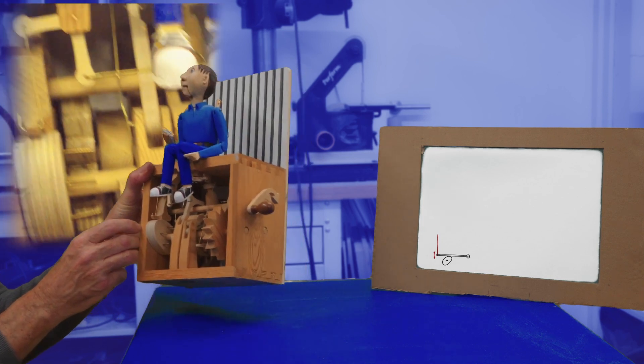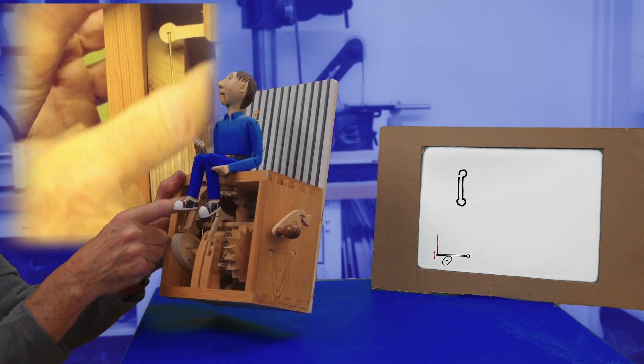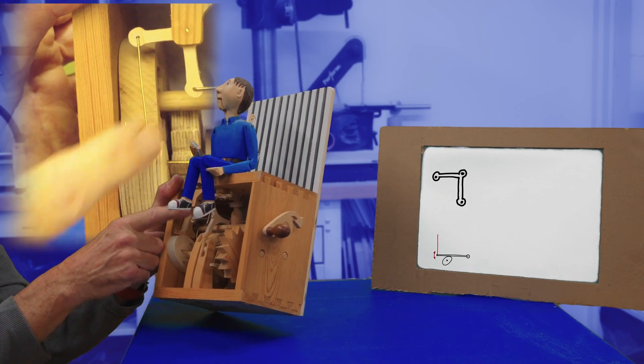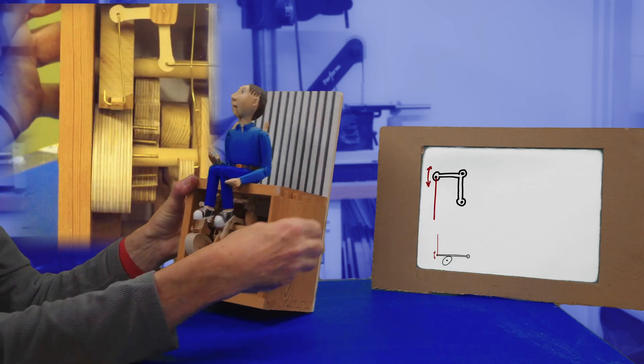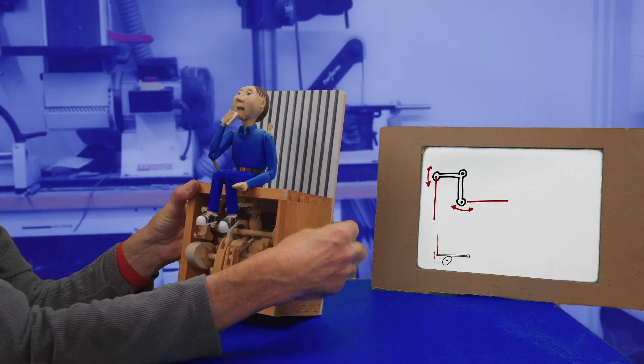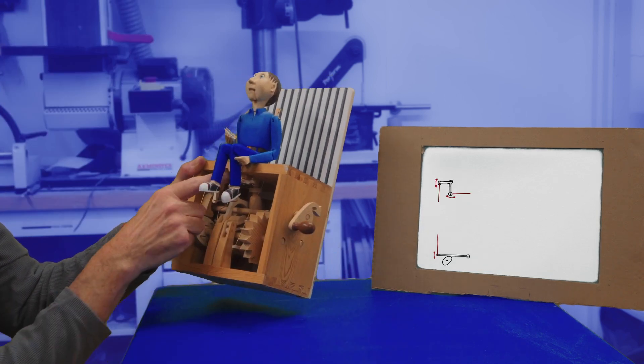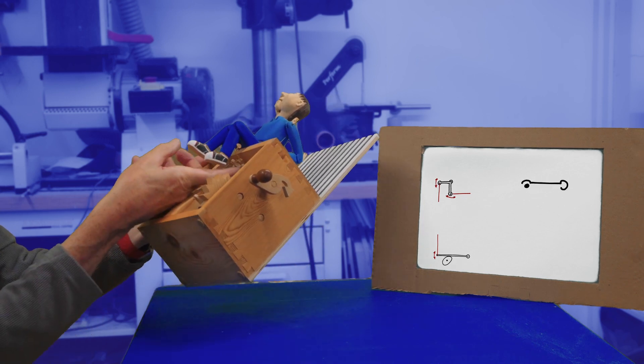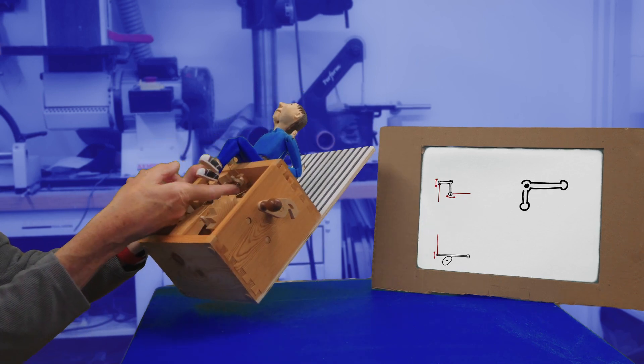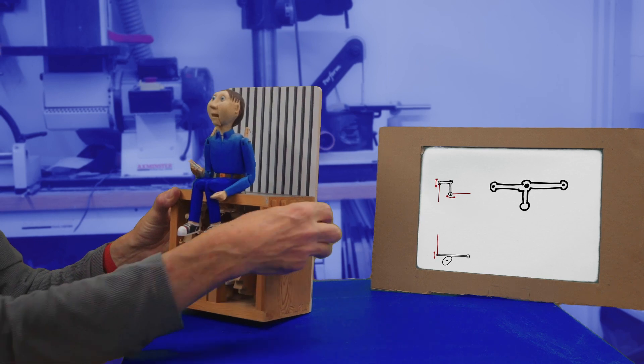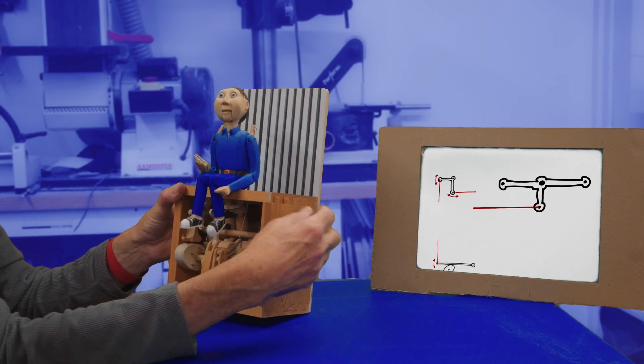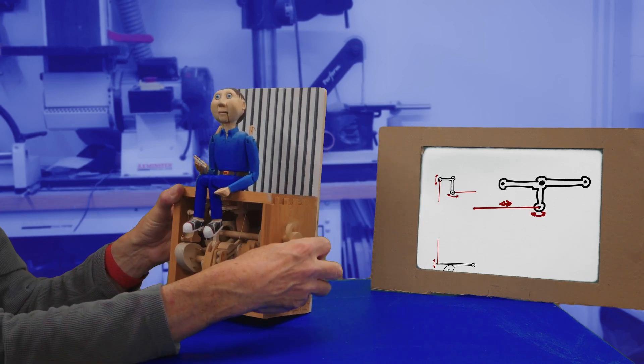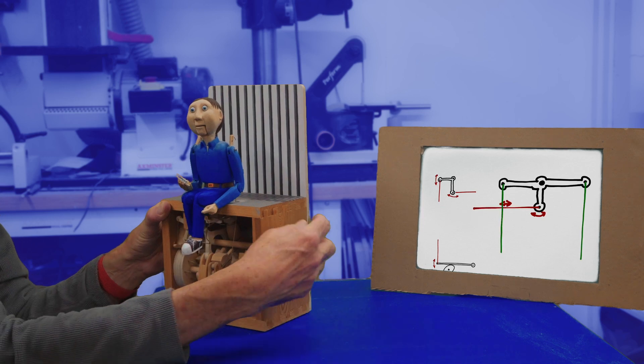That's then going through to a linkage which is then going to a single final linkage which is a T-shape. So just one motion backwards and forwards and that's converted to the two legs which then swing backwards and forwards.